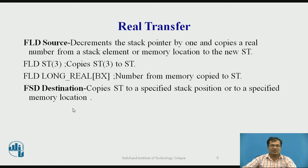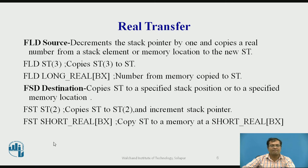FST destination copies the content of ST to a specified stack position or memory location — it is exactly the reverse of FLD source. For example, FST ST(2) copies the content of ST to ST(2) and increments the stack pointer by 1. FST short real [BX] copies the content of ST to the memory location addressed by BX.